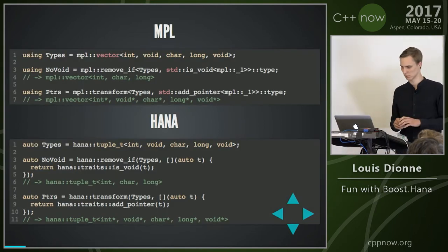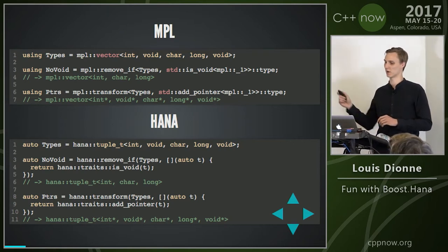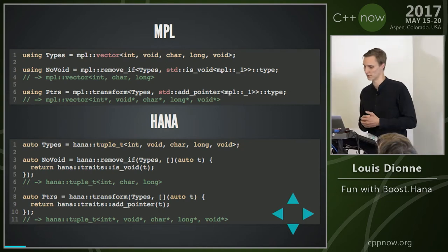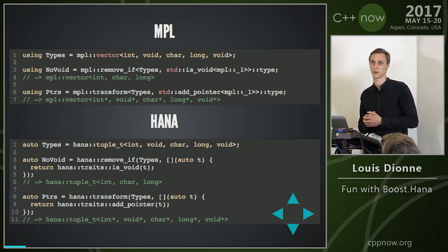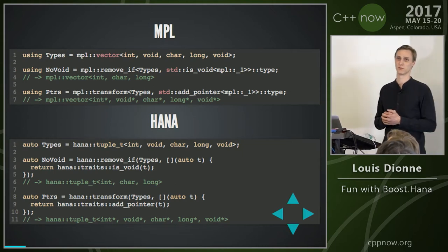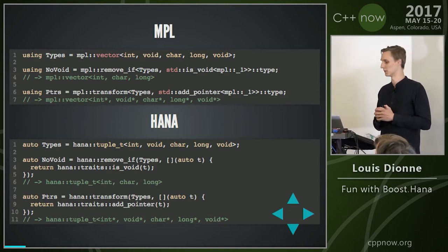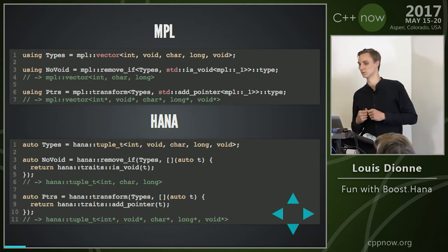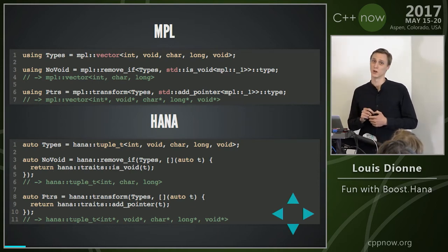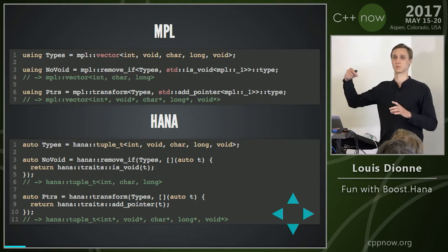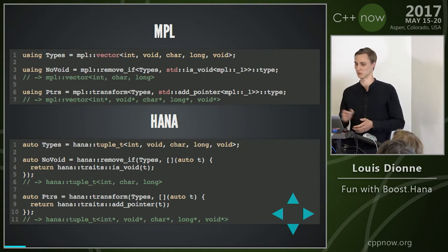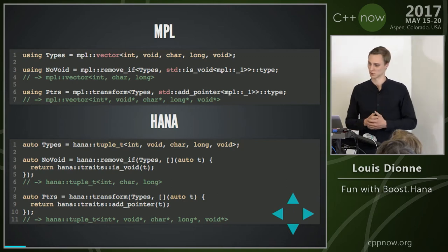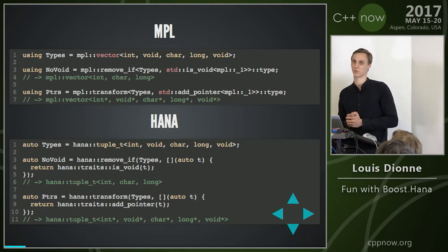To give an example of how that works: normally in MPL, if I have an MPL vector containing a bunch of types and I want to remove the void types from that sequence, I just use MPL remove_if and pass in my type-level sequence. Then I pass in a type-level lambda — called the MPL lambda expression — saying std::is_void of MPL::_1. What that means is you call std::is_void on the first type argument being passed, and you remove everything that satisfies that type-level lambda. What you get is an MPL vector of int and long.